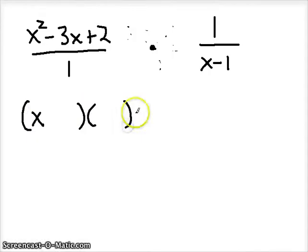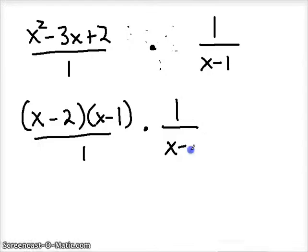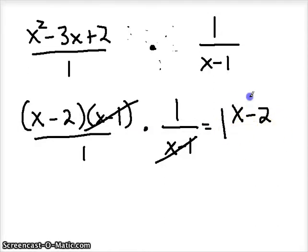So factor first and then multiply. Let's factor the top left over here. This is just a regular old x factor. Factors of the last term that add up to the middle term here. So if we have a negative 2 and a negative 1, that would add up to negative 3, but multiply to give us positive 2. All that's left now is cancel common factors on top and bottom, and multiply. So we're just left with x minus 2. We could put it over 1, or we could just leave it like that.